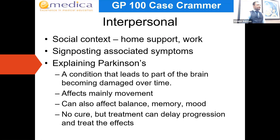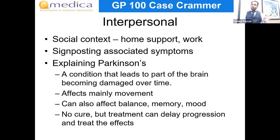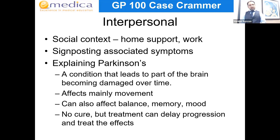Explain Parkinson's in clear language: it's a condition that leads to a specific part of the brain getting damaged over time. The main thing it affects is movement, but it can also affect balance, memory, and mood. There's no cure, but with medication and treatment we can delay the speed at which it progresses and treat its effects — for example, medications can help with the tremor.